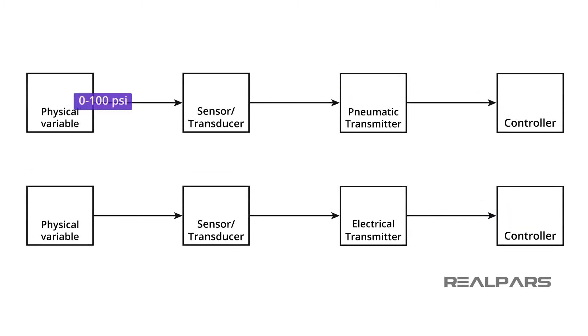In the early days of process control, the standard instrumentation signal was pneumatic, while today, it is more likely to be an electrical signal. The standard pneumatic signal is 3 to 15 psi. The standard electrical signals are 1 to 5 volts, or 4 to 20 milliamps.